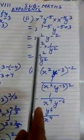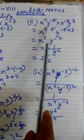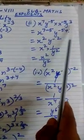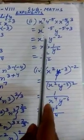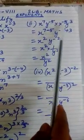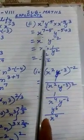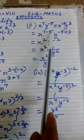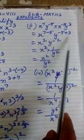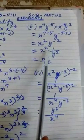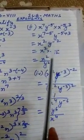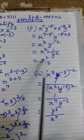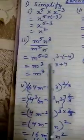Our next sum is x to the power 7, y to the power minus 5, multiplication x to the power minus 5, y to the power 3. Here again multiplication, bases are same, so we will add the powers of the same bases: x to the power 7 minus 5, y to the power minus 5 plus 3. We get x squared into 1 by y squared, because we have y to the power minus 2, so that will be x squared by y squared.